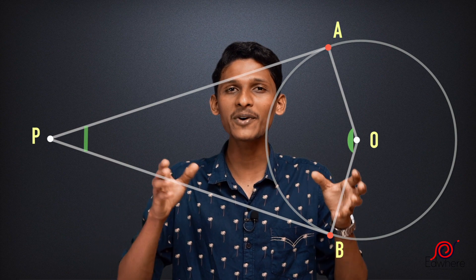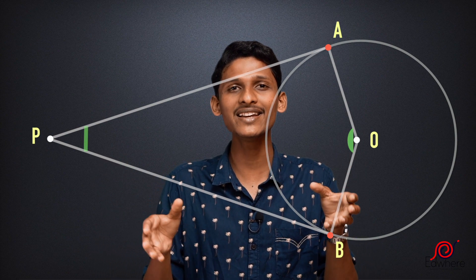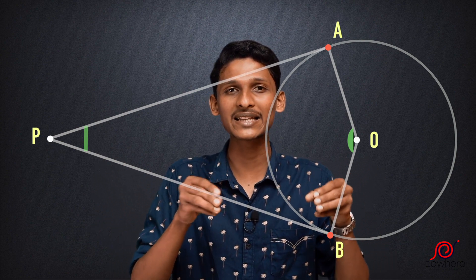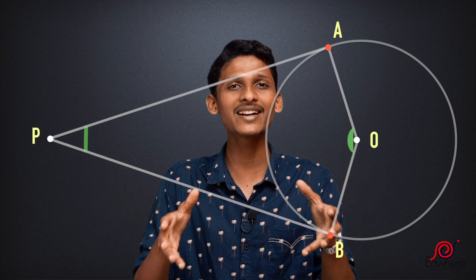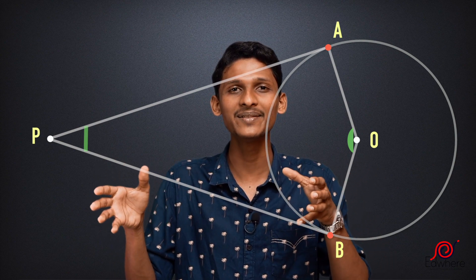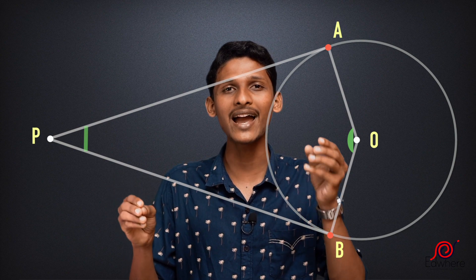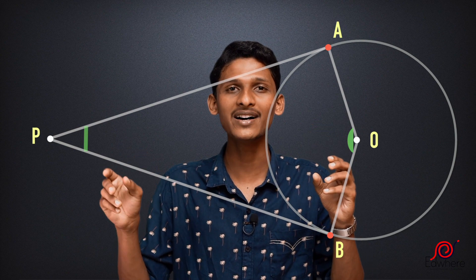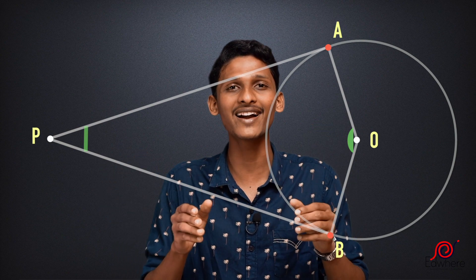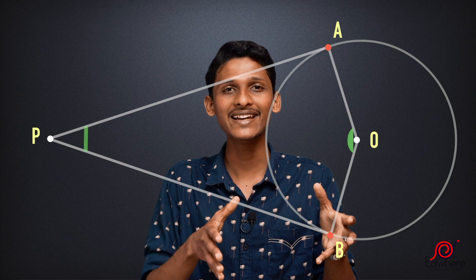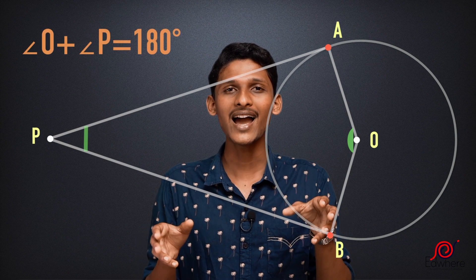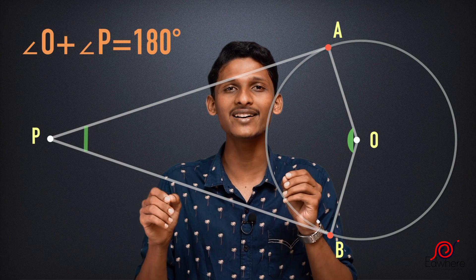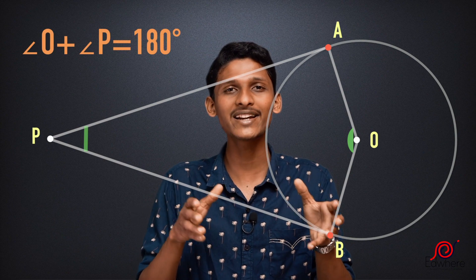What we have said is that we have formed a quadrilateral. These two angles — angle AOB and angle APB — are supplementary. That is, if we add angle AOB and angle APB, we get 180 degrees.